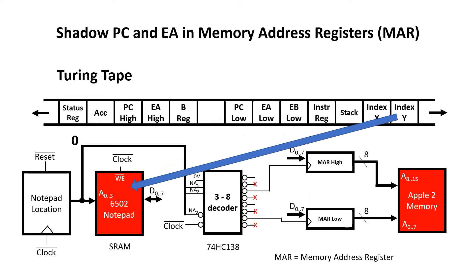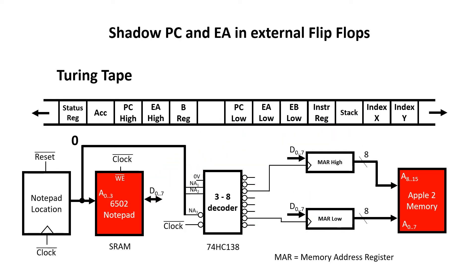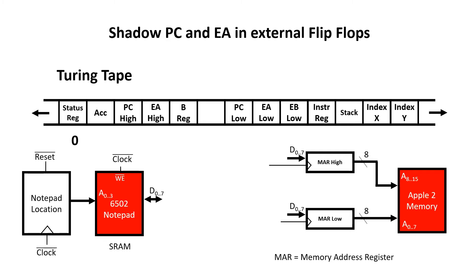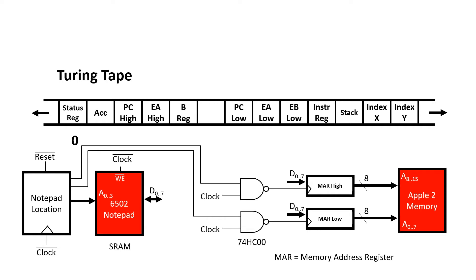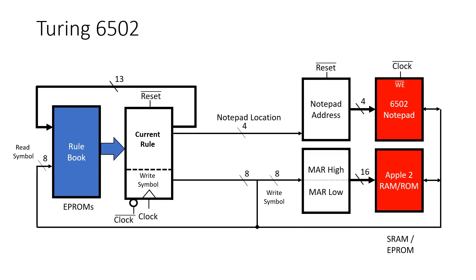Now it's starting to seem a bit silly to use a 74HC138 just to control two signals, so I'm going to get rid of it. In their place, I'm going to use two new signals which come from the notepad location. These signals need to be gated with clock so we don't lose data in back-to-back writes — I'll give an example of this in a later video. And there we have it — that's how we get to the Turing 6502 design.